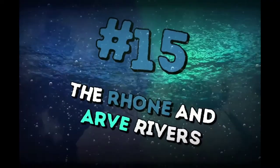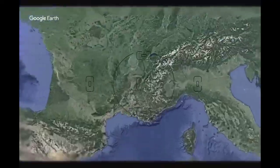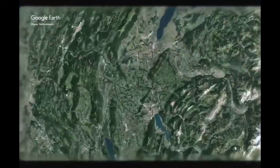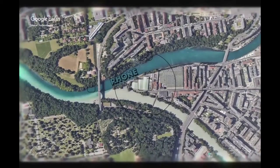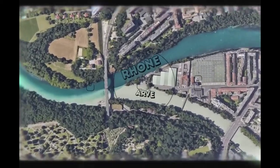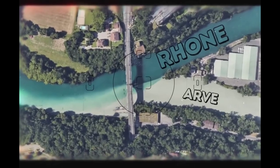The Rhône and Arve rivers flow into each other in Geneva, Switzerland. The Rhône is a pure river that flows out of the lake of Geneva. The Arve is cloudy as it gets its water from the glaciers of the Chamonix Valley.